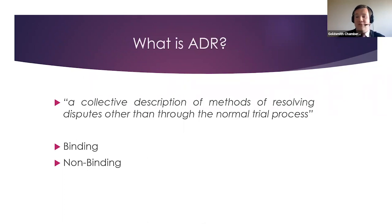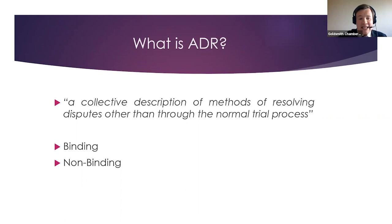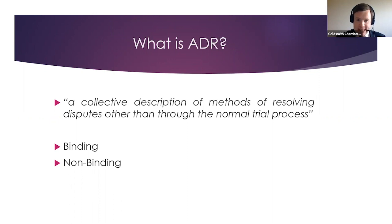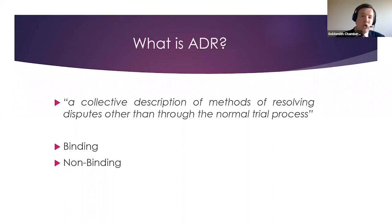So we have to ask ourselves exactly what is alternative dispute resolution. The problem is that there isn't a direct definition. The glossary of civil procedure rules simply states that ADR is a collective description of methods of resolving disputes other than through the normal trial process. So it's effectively any other way of resolving a dispute which doesn't require the input of the courts directly. Usually you find those ADR mechanisms fall into two broad categories. The first is binding ADR methods — when parties enter into a binding ADR method it acts very similar to a court; the decision is final and parties will be able to enforce whatever settlement is reached. You then have non-binding ADR mechanisms where, if it ultimately fails, the parties can then continue with the litigation.